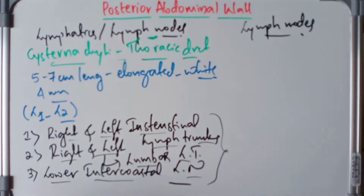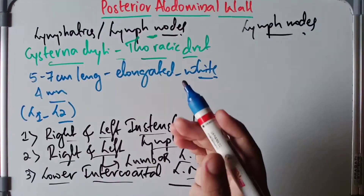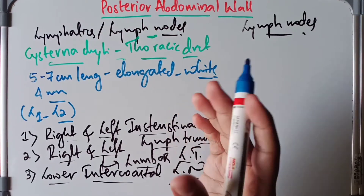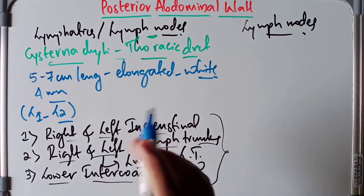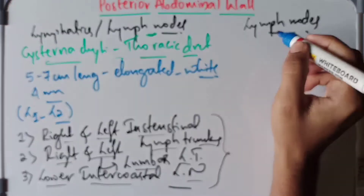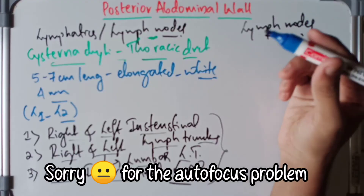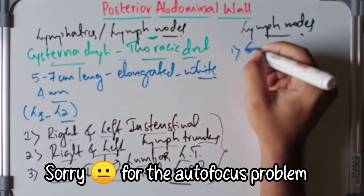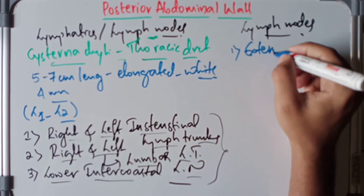Now, the lymph nodes of the posterior abdominal wall. These lymph nodes are located along the external iliac arteries, the common iliac arteries, and the abdominal aorta. Accordingly, they are termed the external iliac nodes, common iliac nodes, and aortic nodes.